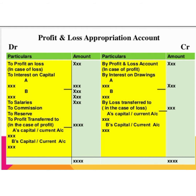The next step is to transfer the amount of interest on drawings on the credit side. Then enter the amount of interest on capital on the debit side, and enter all the payments made to the partners — that is salaries, commission — then any amount transferred to reserves account, etc.